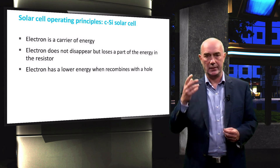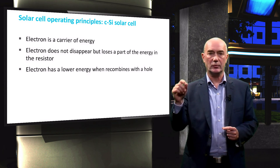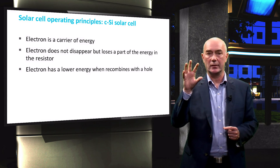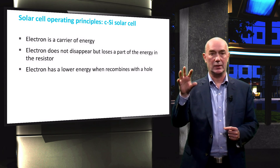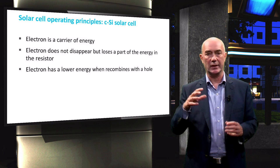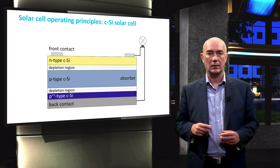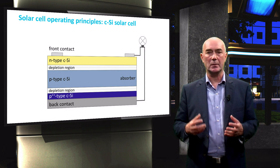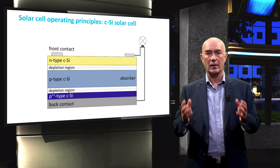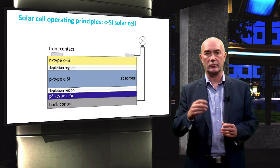So you see that in a solar cell, an electron is a carrier of energy. An electron does not disappear, but it loses part of its energy in the resistor, or as we call it, the load. After releasing part of its energy, an electron has lower energy and will recombine with a hole. To utilize solar power, we need a properly designed solar cell with semipermeable membranes with attached electrodes to allow collection of only holes or electrons.